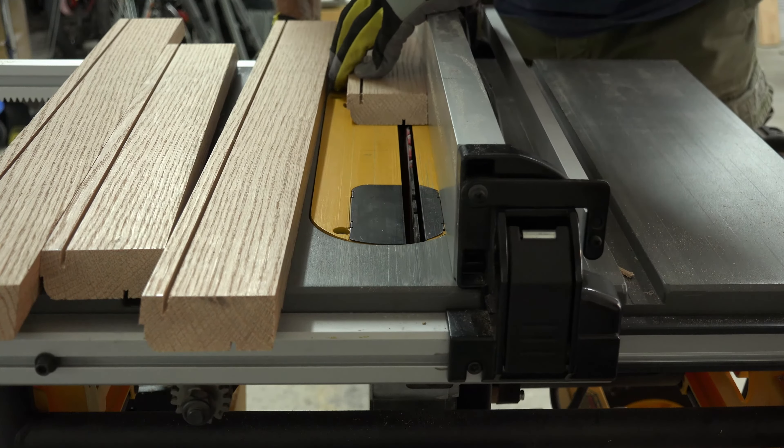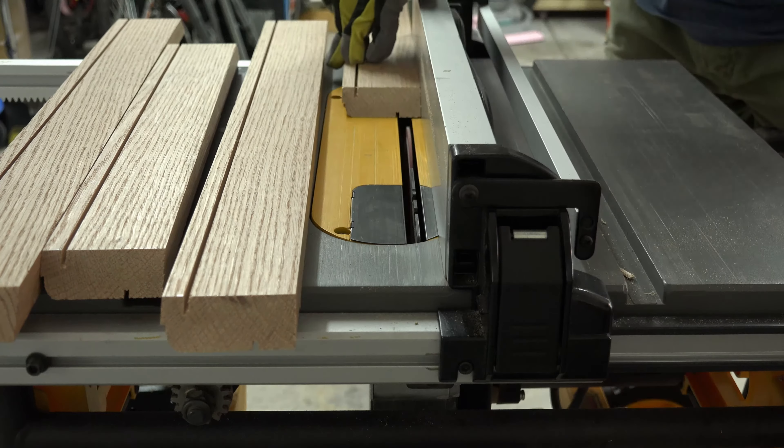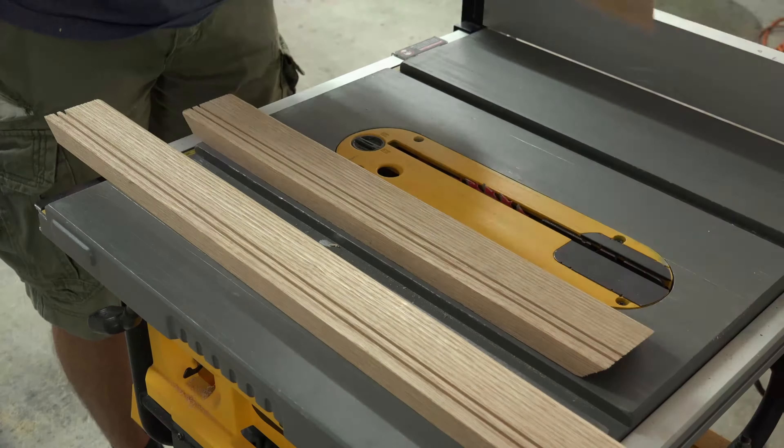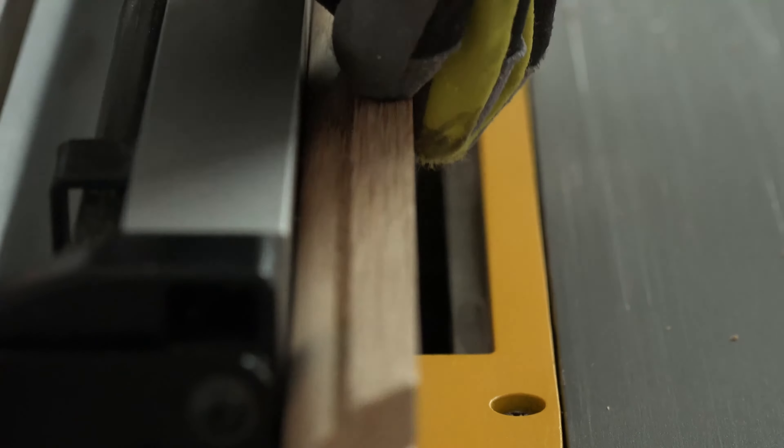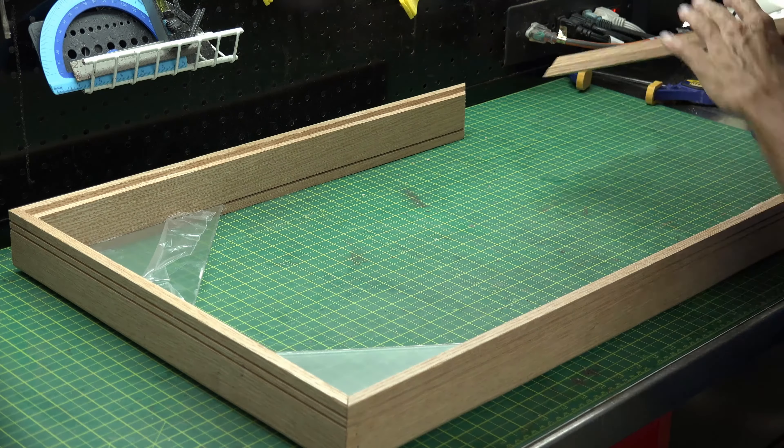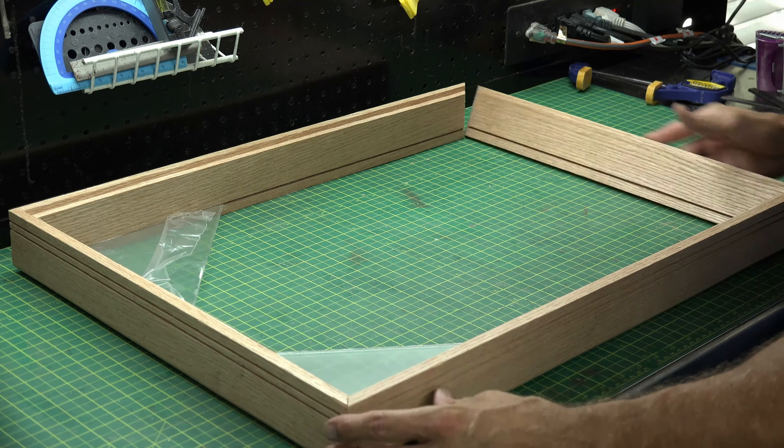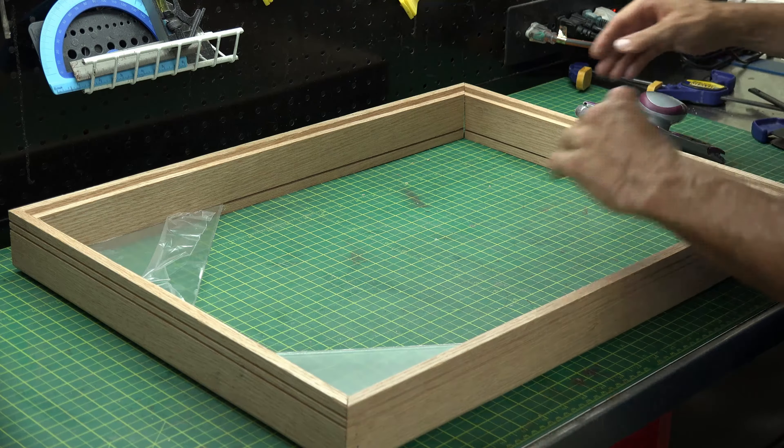With a dado I cut the back plate groove. With some scrap plexiglass, I place it in the glass track to hold the corners in place. I ensure it's square and then I cut my back plate.